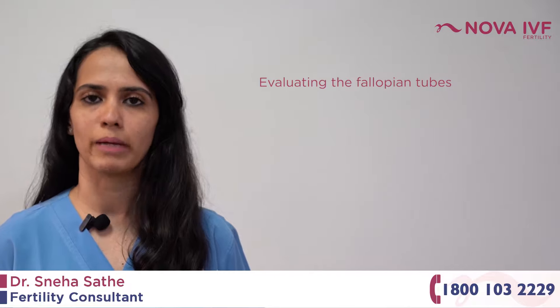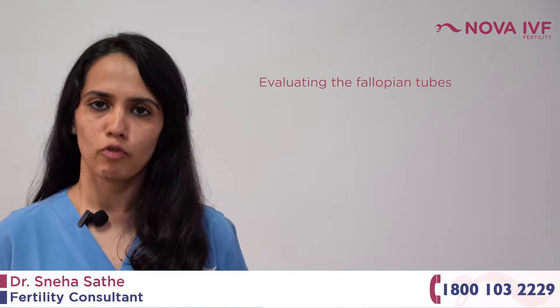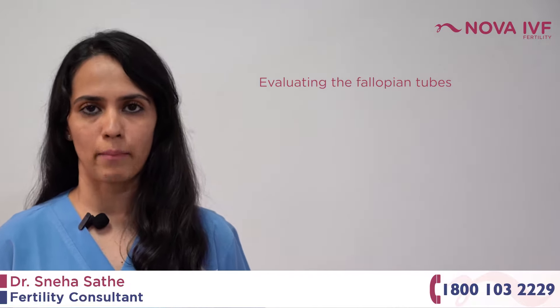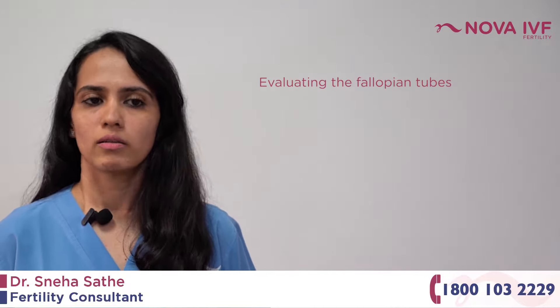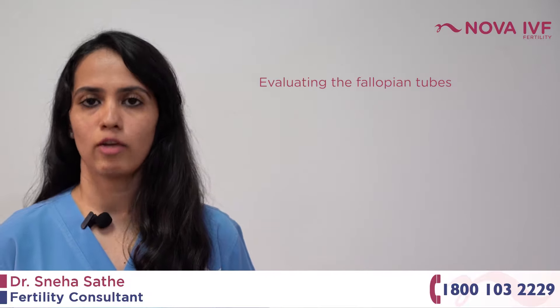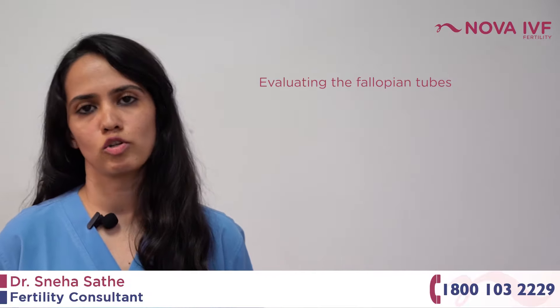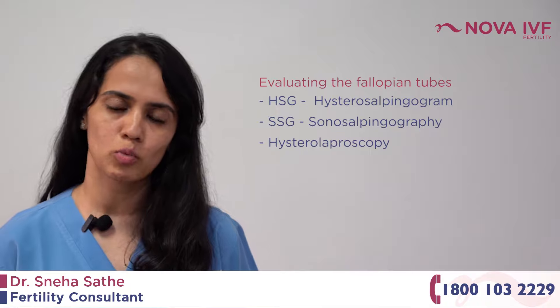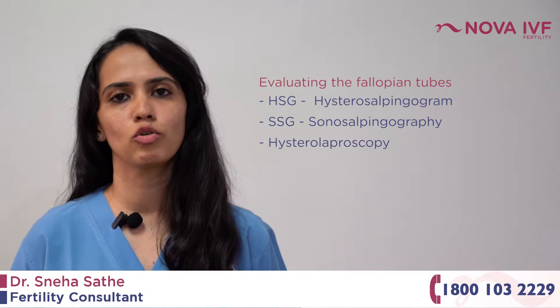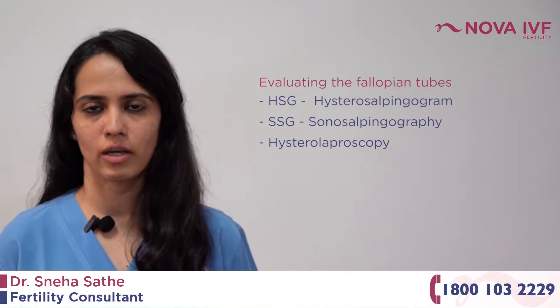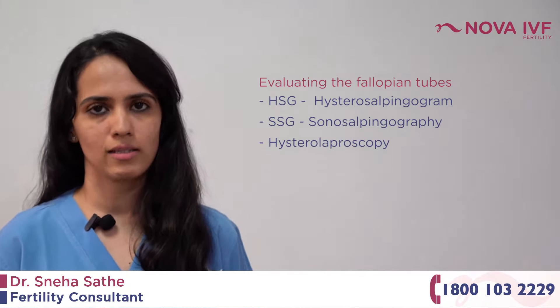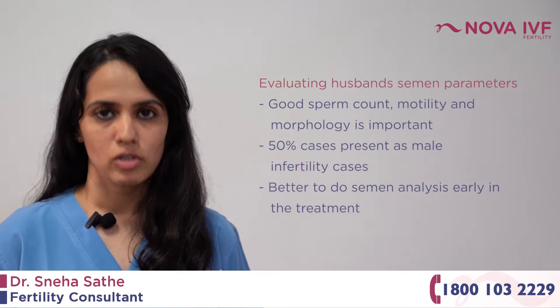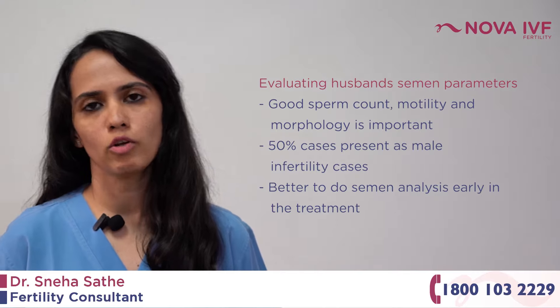The third thing is that both fallopian tubes — if not both, at least one — should be patent. If your fallopian tubes are unhealthy or damaged, pregnancy sometimes does not happen, and there is also a higher risk of having an ectopic pregnancy. The best way to know whether your tubes are normal and patent is the HSG. If not HSG, you can do an SSG or a hysterolaparoscopy.